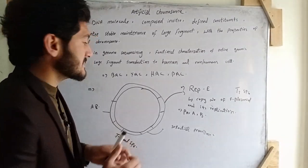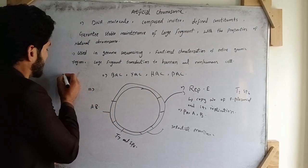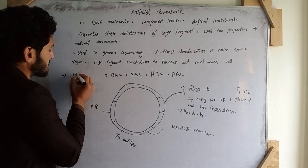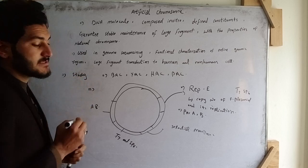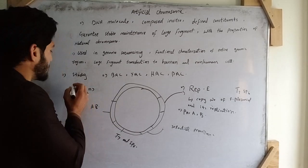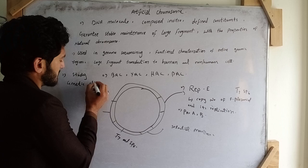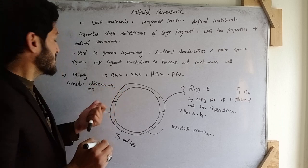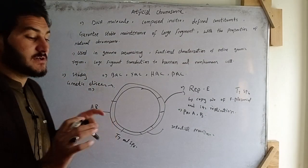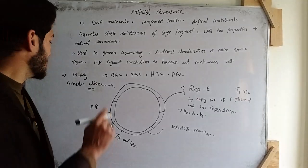Now, what are the applications of Bacterial Artificial Chromosomes? Using a bacterial artificial chromosome, we can study different types of genetic diseases — those diseases which are transferred genetically from parents to offspring.